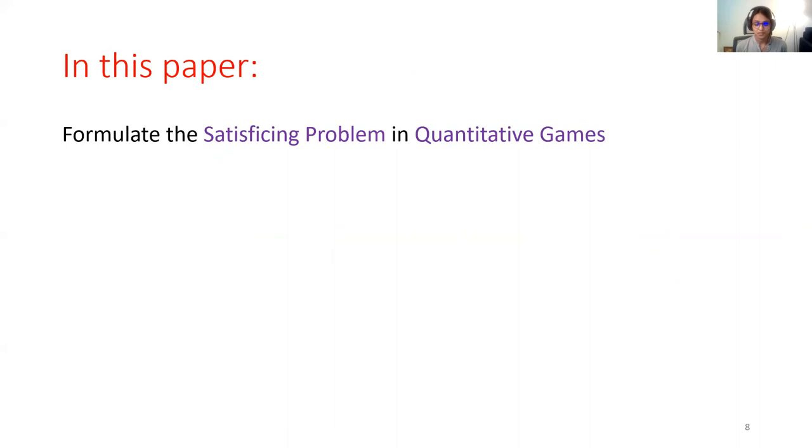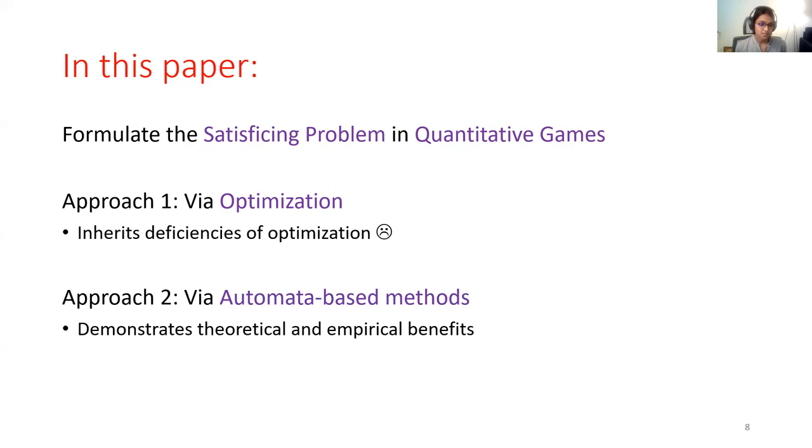In this work, we formulate the problem of satisficing in quantitative games and present two approaches to solve satisficing. In the first approach, we solve satisficing using the optimization problem instead, and are indeed disappointed because through this method, we see no benefits of satisficing over optimization, which is why we present another approach.